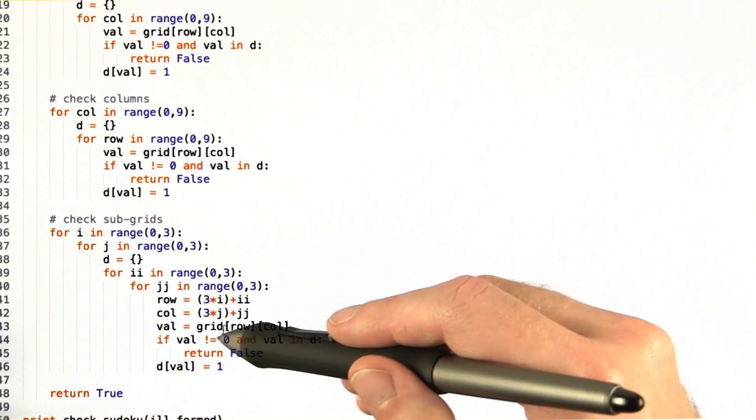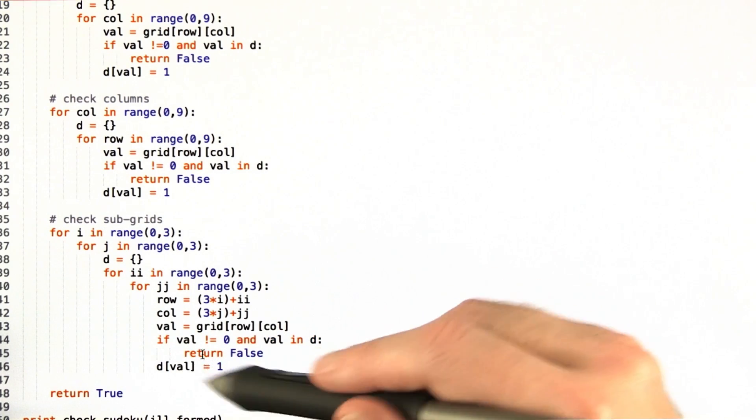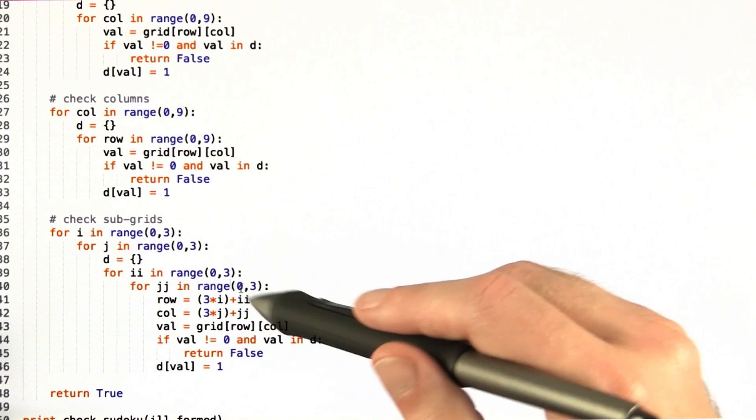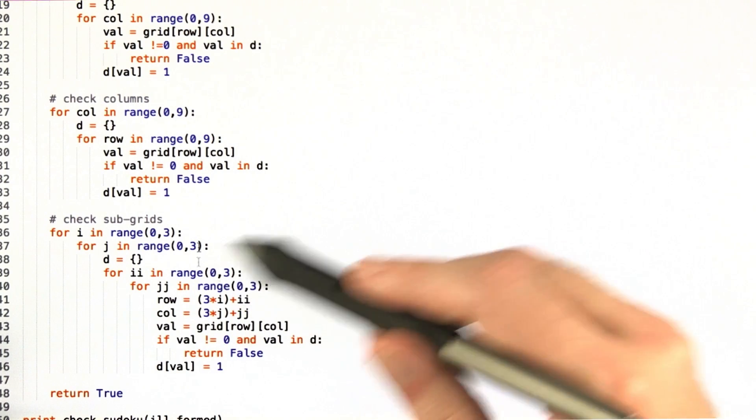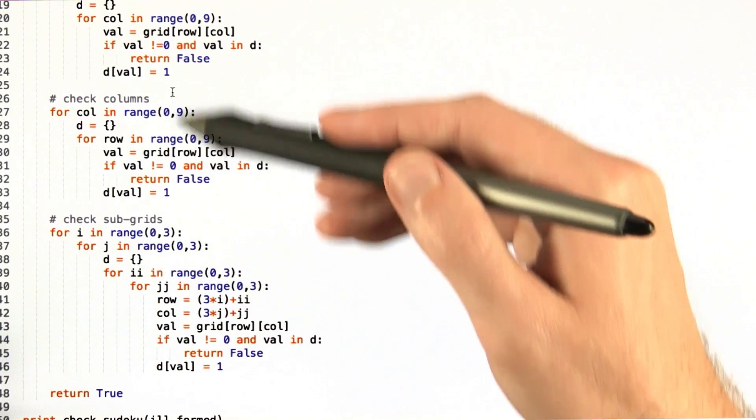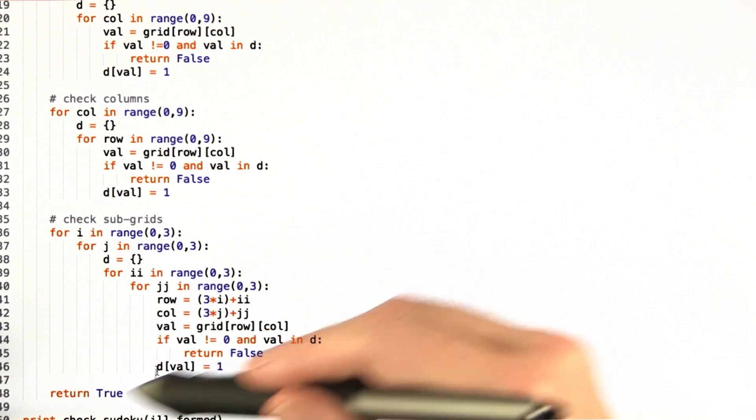And after that, the code is essentially identical. We just check the dictionary to see if we already have the relevant value in that subgrid. And if we pass through all of this without returning false, then we return true.